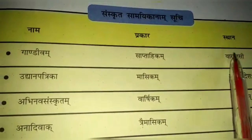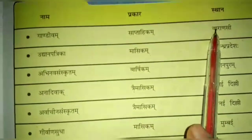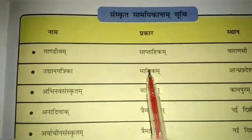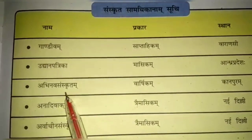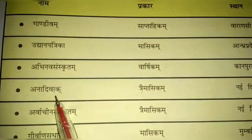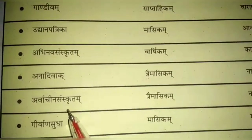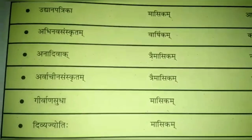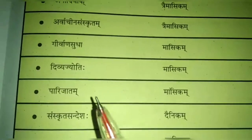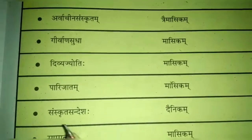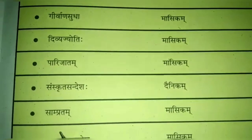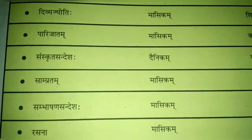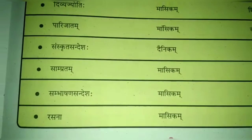Sanskrit magazine list: Gandhivam — Saptahikam, meaning weekly (seven days). Udhyanpatrikam — Mashikam, meaning monthly (one month). Abhinav Sanskritam — Varsikam, meaning yearly (one year). Anadivab — Tri-Mashikam, meaning every three months. Arvachin Sanskritam — three months. Girvan Shudha — Mashikam, one month. Divya Jyoti — Mashikam, one month. Pari Jatam — Mashikam, one month. Sanskrit Sandesh — Dainikam, Delhi. Sampratam — Mashikam, one month. Sambhashan Sandesh — Mashikam, one month. Rasna — Mashikam, one month.